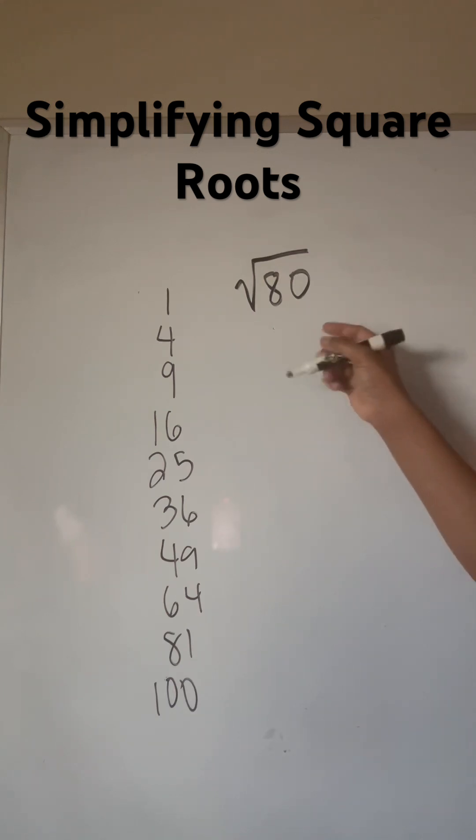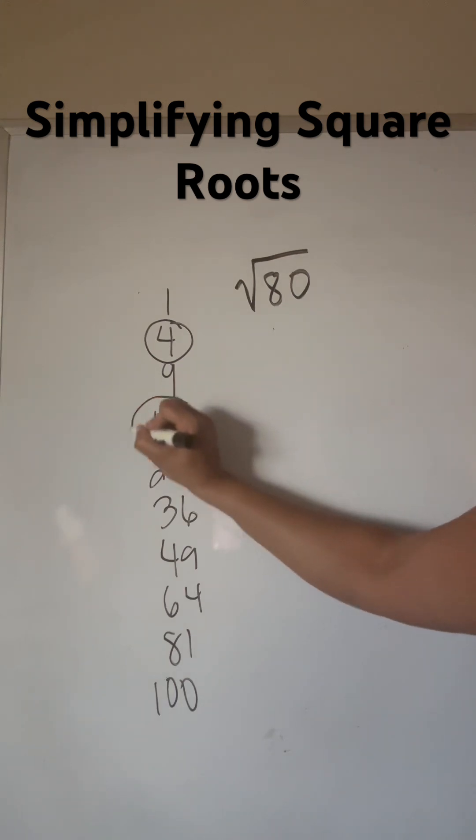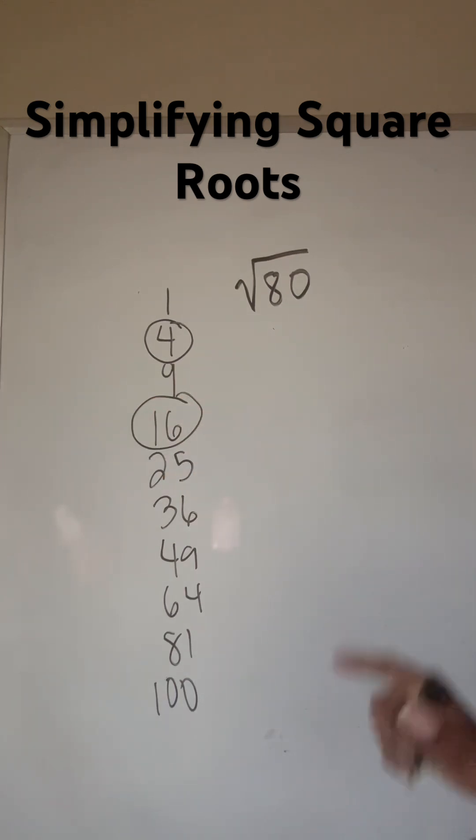So you want to look to see if any of those go into 80. I know for a fact 4 goes into 80, but I want to make sure that I have the biggest one. So I also know that 16 goes into 80, and you could just take 80 and divide it by each of those to figure it out.